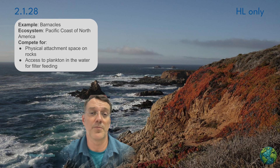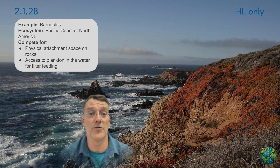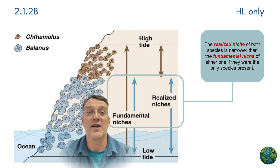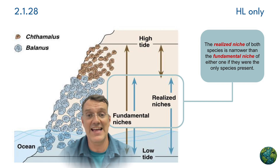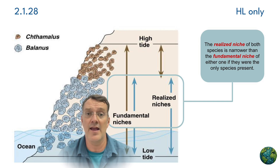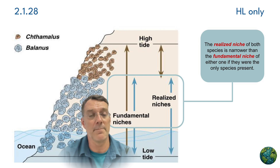The first example is probably the most common one that you'll see, and that's barnacles on the Pacific coast of North America. There are two species we're concerned with: Chthalamus stellatus and Balanus balanoides. Both species could theoretically live anywhere in the intertidal zone — the zone along the coast between the mean low tide line and the average high tide line. That's their fundamental niche.